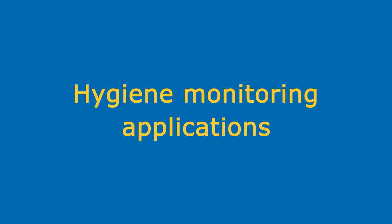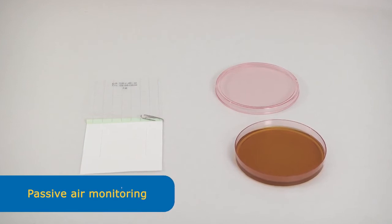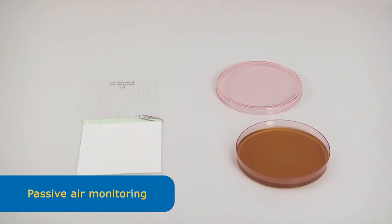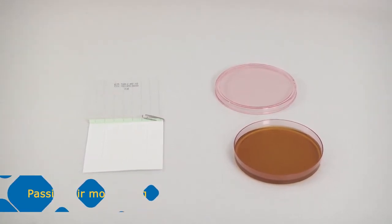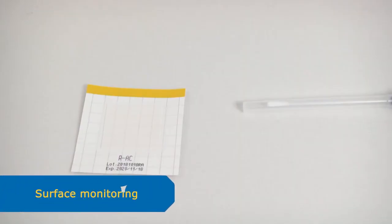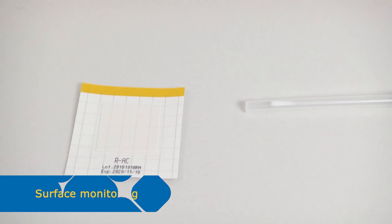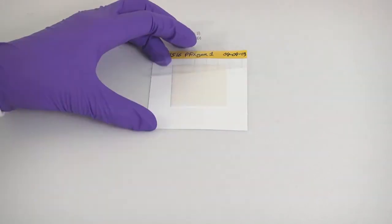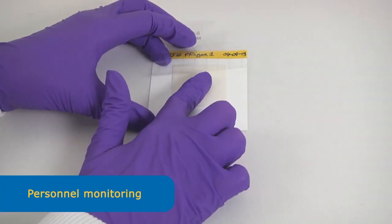MC MediaPad is a versatile product. It can also be used for hygiene monitoring. Just open the pad for passive air monitoring. For surface monitoring, simply use a swab or a pad for direct surface contact. It is also suitable for personnel monitoring.